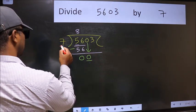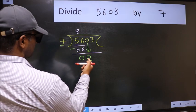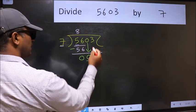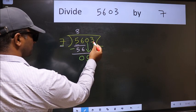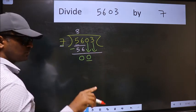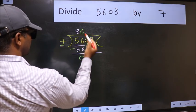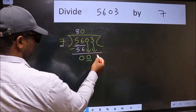Now here we have 0 and here 7. 0 is smaller than 7. So we should bring down the second number. And the rule to bring down second number is we should put 0 here. Then only we can bring this number down.